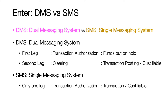Let's understand a bit more about this two-step process called DMS, dual messaging system. In case of a DMS, the first leg is the process called transaction authorization, where the merchant gets an approval from the issuer for the transaction. In the second leg, the merchant through the acquirer confirms to the issuer that the transaction is completed — that is, the goods and services have been delivered. The acquirer sends a clearing file to the issuer, and when the issuer receives the clearing file, it can bill the customer for the transaction.